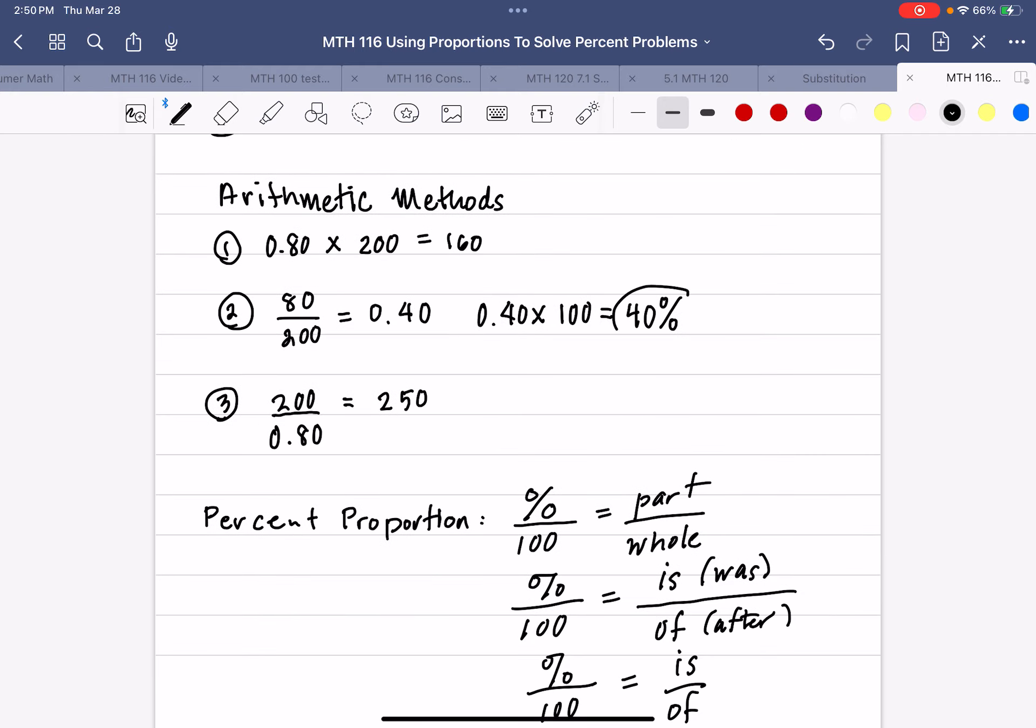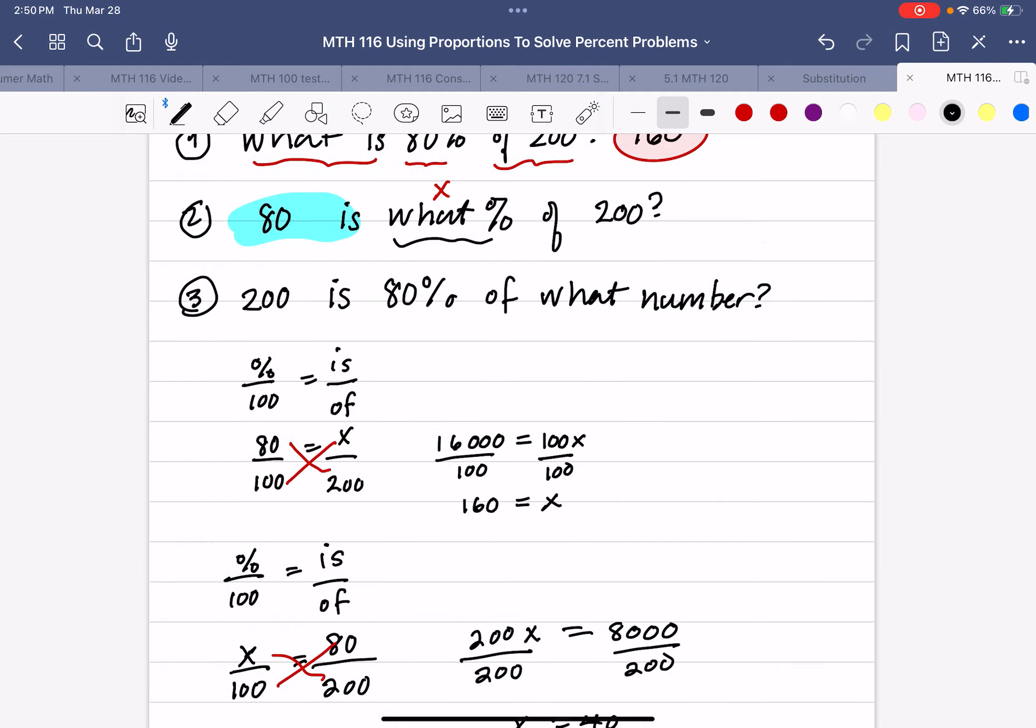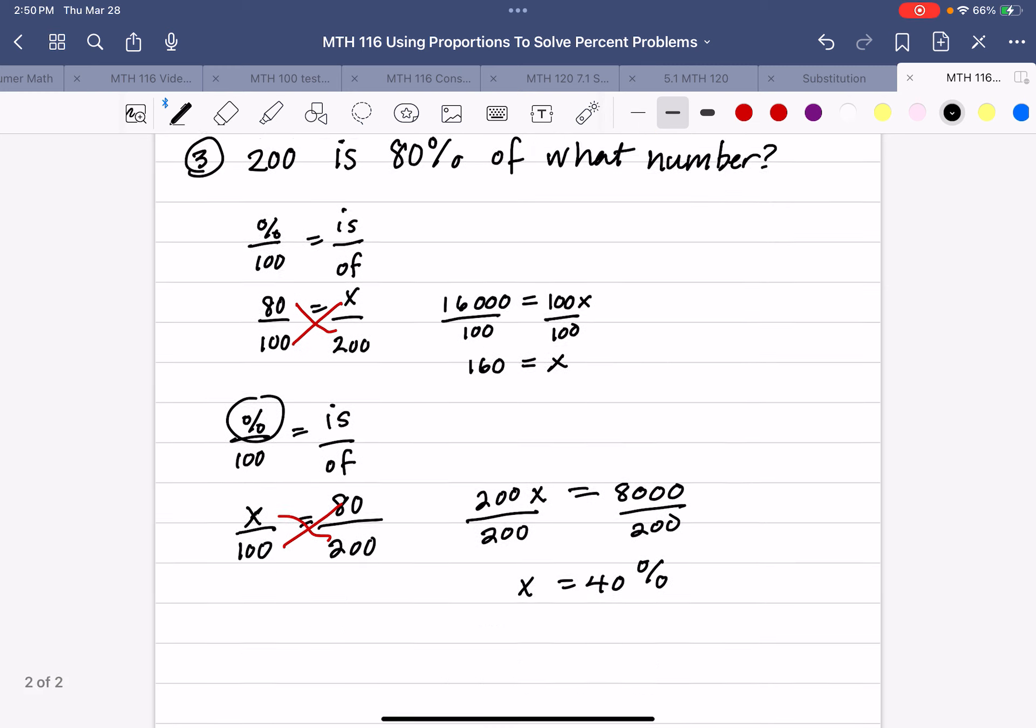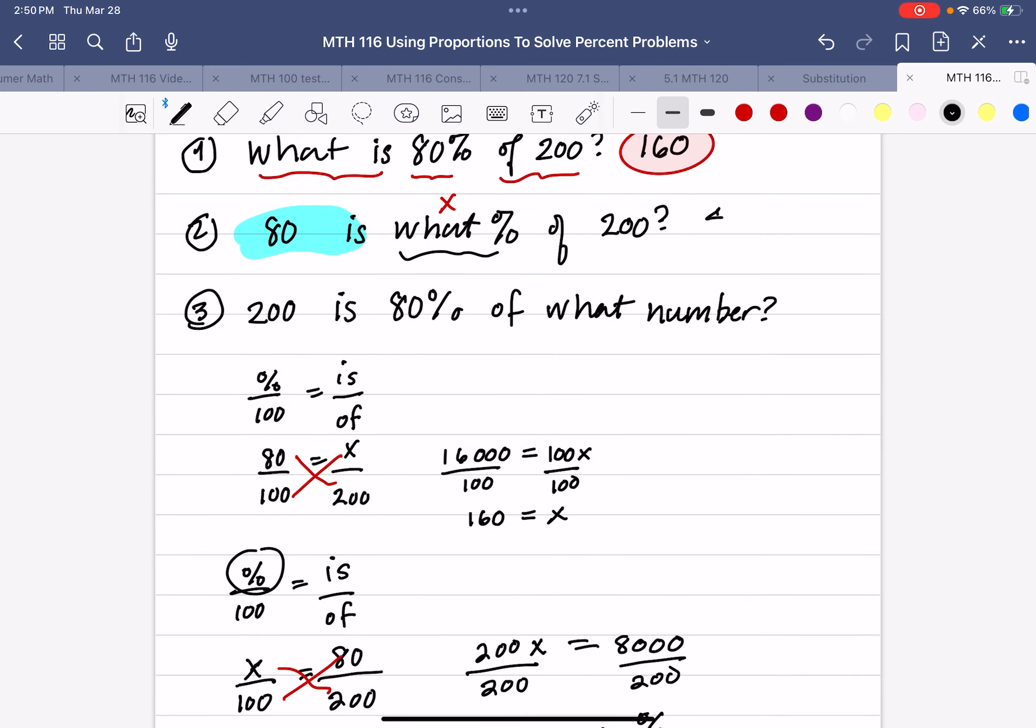Divide both sides by 200, and grab my calculator. 8,000 divided by 200 is 40. So x equals 40. The same thing we got here. Now, remember, this is percent unknown. So we have to write our percent symbol. So 40 percent. Same answer. Be sure you write percent in your answer.